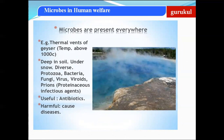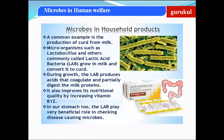Microbes can be found where the temperature is above 100 degrees, even in deep soil and under snow. Diverse types — protozoa, bacteria, fungi, viruses, viroids, and prions — are present even in the soil. In this chapter, we are studying the usefulness of microbes — how microbes are beneficial for human welfare.